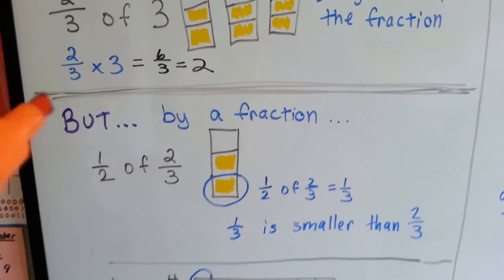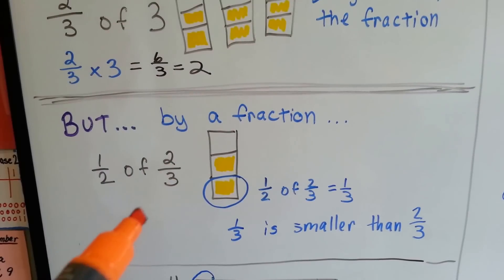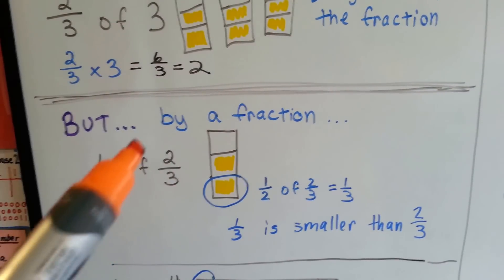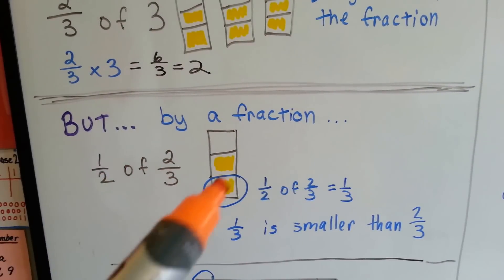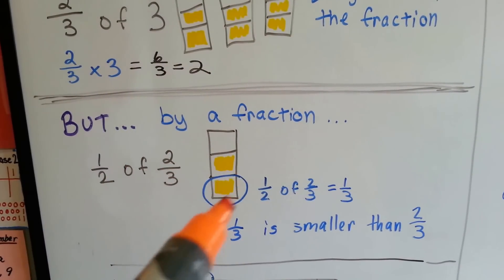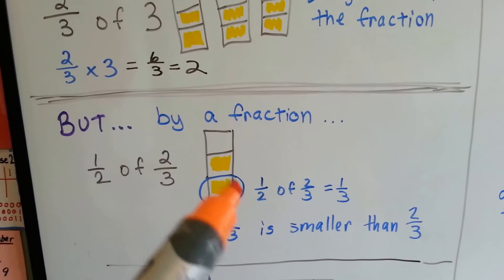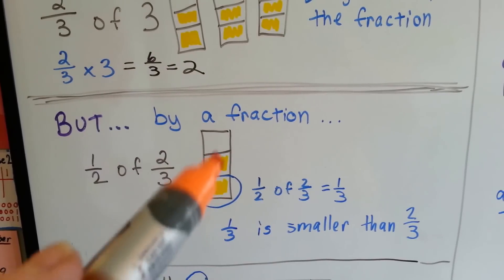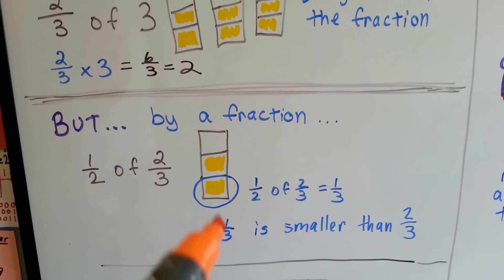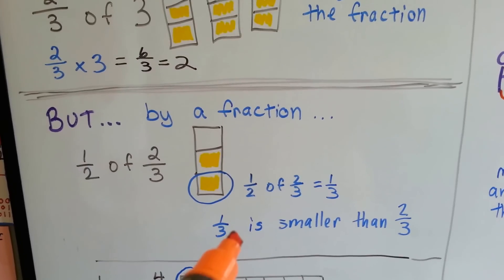But if we multiply a fraction by a fraction — half of two-thirds — here's the two-thirds. If we take half of it, that's smaller than the two-thirds. One-third is smaller than two-thirds.